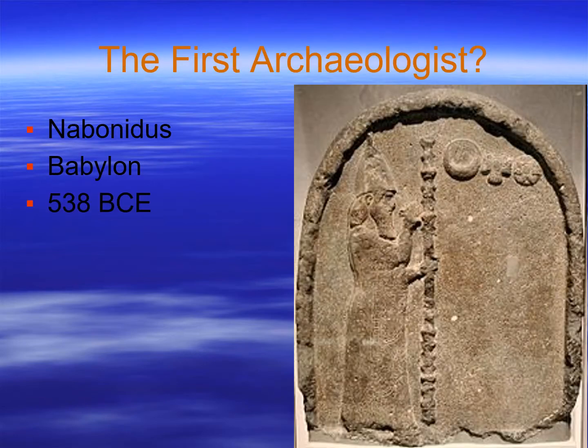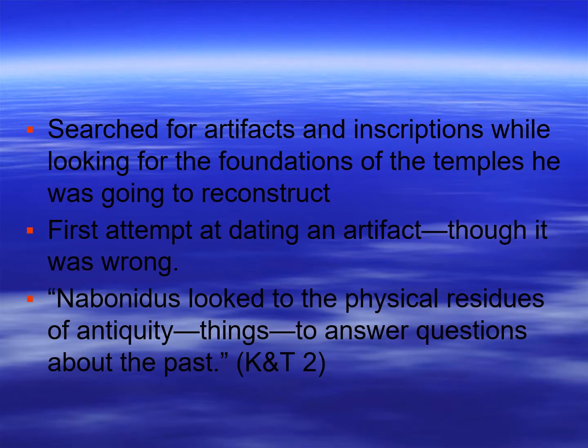One of the earliest evidences we have of concern with the past was Nabonidus from Babylon, around 538 B.C.E. He searched for artifacts and inscriptions while looking for the foundations of a temple he was going to reconstruct. He tried to figure out the relative dates of things, although he was wrong. Nabonidus looked to the physical residues of antiquity — things — to answer questions about the past. That's a key focus of this class: thinking from things, moving from artifacts and features to understandings of the past.